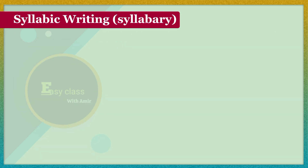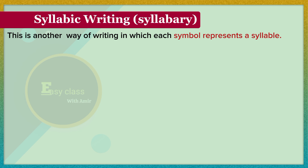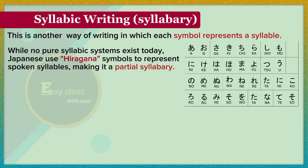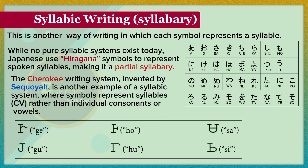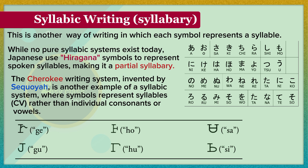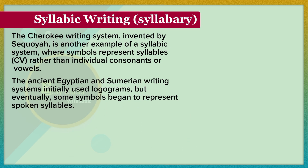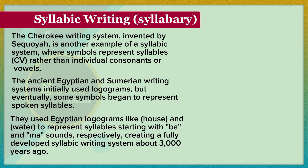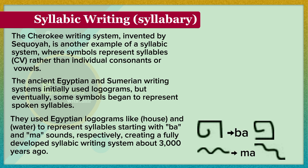Syllabic writing. This is a way of writing in which each symbol represents a syllable. While no pure syllabic systems exist today, Japanese uses hiragana symbols to represent spoken syllables, making it a partial syllabary. The Cherokee writing system, invented by Sequoia, is another example of a syllabic system where symbols represent syllables (CV) rather than individual consonants or vowels. The ancient Egyptian and Sumerian writing systems initially used logograms, but eventually some symbols began to represent spoken syllables, using logograms like house and water to represent syllables starting with 'b' and 'ma' sounds respectively, creating a syllabic writing system.